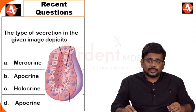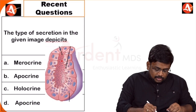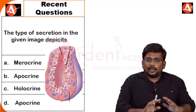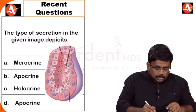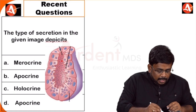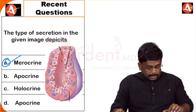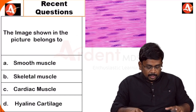Looking at the picture in the question, there is no disintegration of the cell, no damage — the secretion just comes through. So this belongs to merocrine type of secretion.